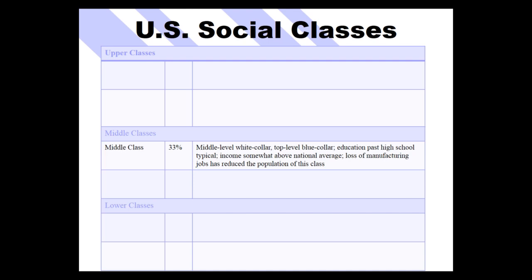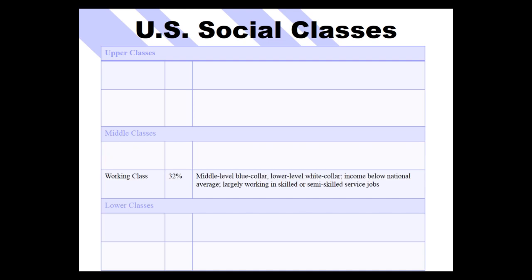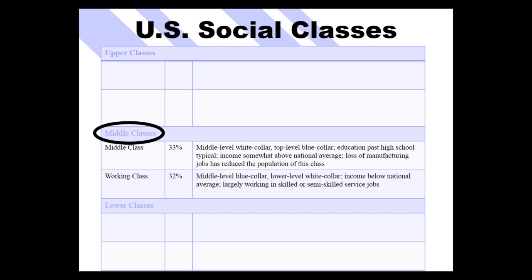Then there's the so-called working class — the working middle class — mid-level blue collar and lower-level white collar. Income is slightly below the national average, working in skilled or semi-skilled service jobs. Together, these give us the middle class, at about 65% of the population.